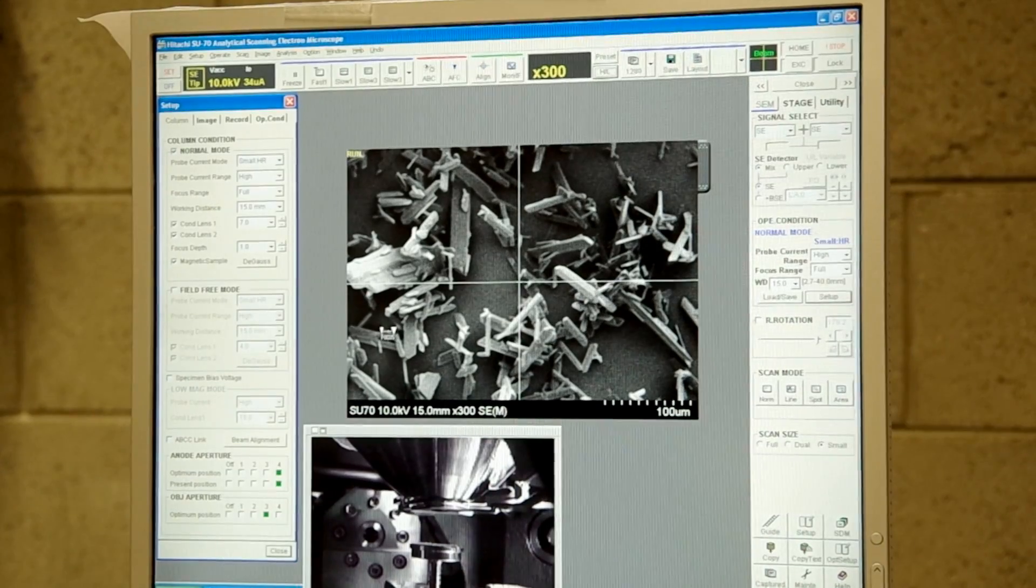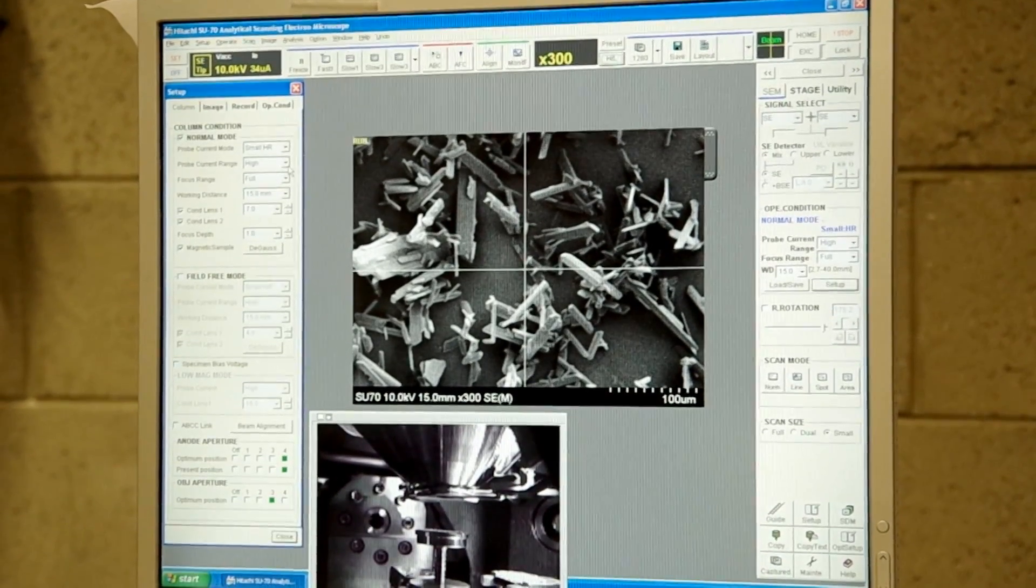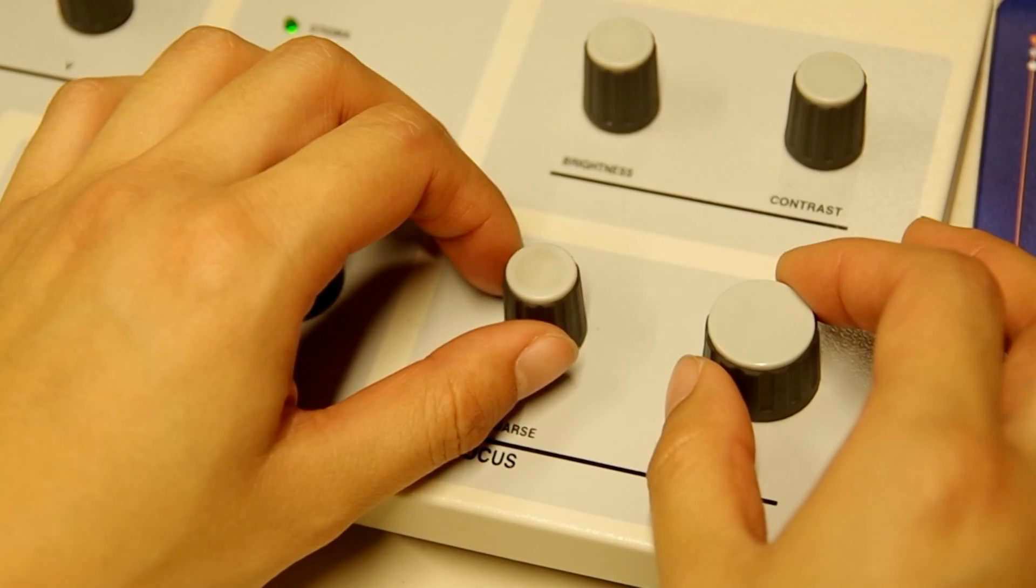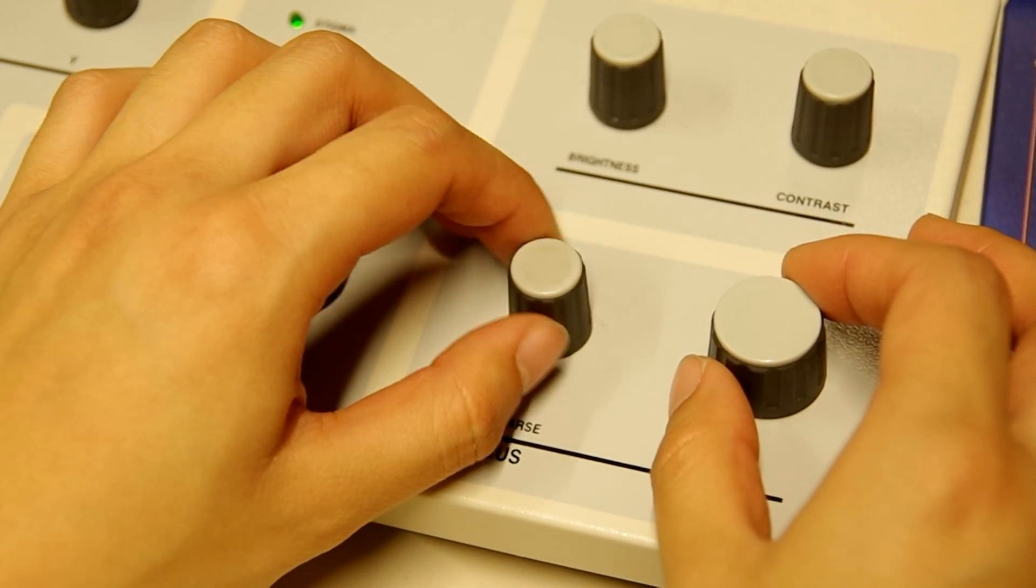The focus, brightness, magnification, and the point of interest is controlled by the control panel to get better images.